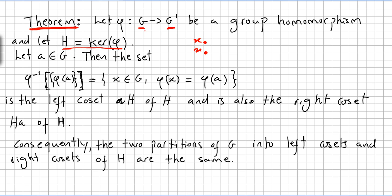All the X, X0, X1, from G, that will be taken to the identity prime of G'. Let A in G, then the set of the inverse image of Φ of A equals X in G such that Φ of X equals Φ of A. Very, very important, this. So this is the left coset A·H of H, and is also the right coset H·A of H.